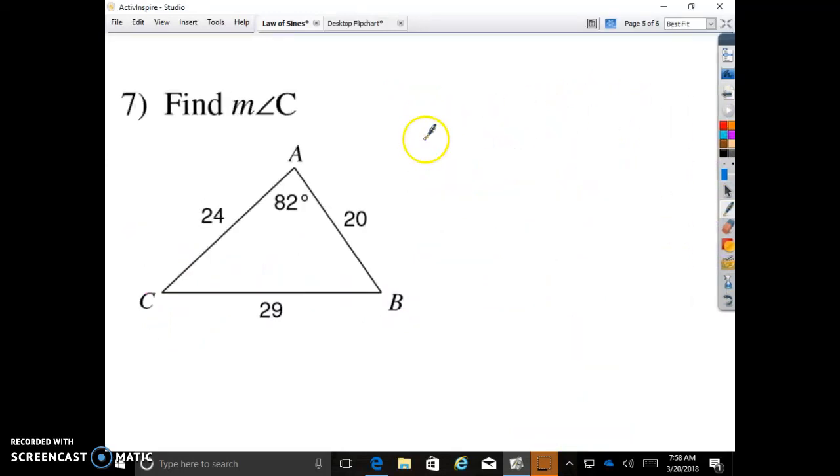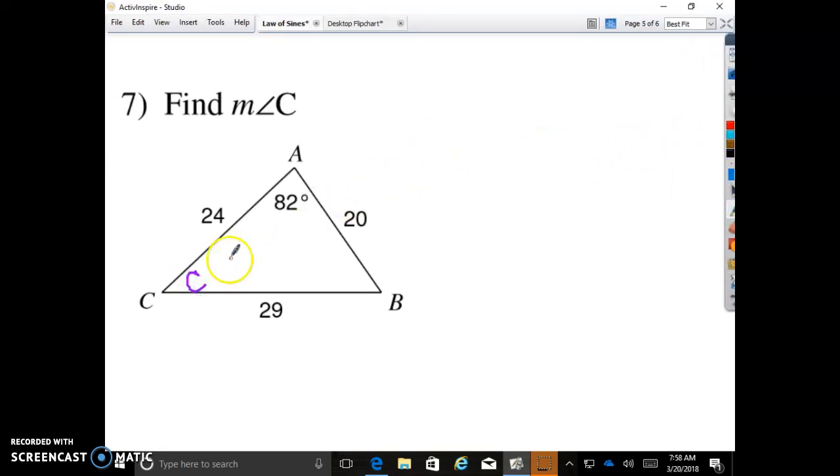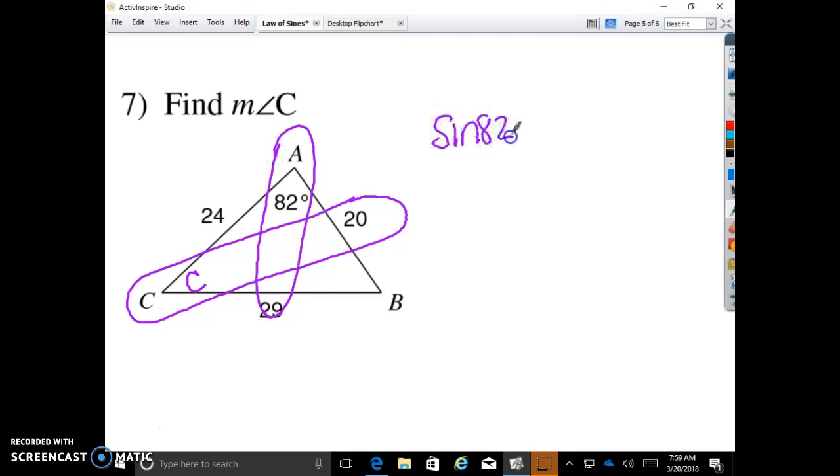Find the measure of angle C. So we're going to look for C. This one we're looking for the angle. So we're definitely using C and 20. And then we need another pair. Am I going to use B and 24 or am I going to use 82 and 29? 82 and 29 because they're a perfect pair. We have both pieces of information. So sine of 82 is to side length 29 as sine of C is to side length 20. Cross products and solve.